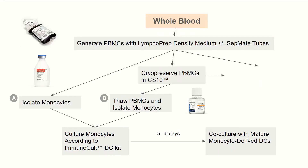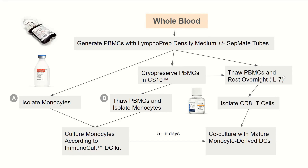Looking at whole blood as the starting material, the logistics are very similar to leukapak. However, PBMCs must first be enriched from whole blood using a density gradient reagent such as Lymphoprep. Optionally, you can use SepMate tubes for greater ease and convenience. Once PBMCs are ready, you can elect to isolate and culture monocytes immediately, or cryopreserve them in CryoStor CS10 and thaw them at your convenience. PBMCs should be thawed right before you are ready for co-culture with monocyte-derived dendritic cells.